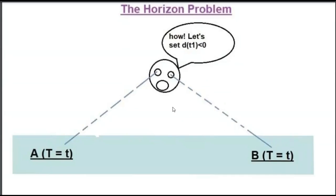The first problem I will consider is the horizon problem. I hope you have learned about heat transfer. Heat can be transferred through conduction, through convection, and through radiation. In today's phase of the universe, there is a complete vacuum — most of the universe is an empty void. So conduction and convection are bad choices; however, we have radiation.